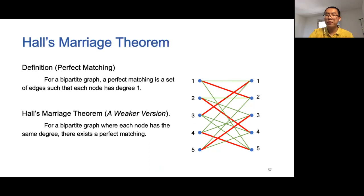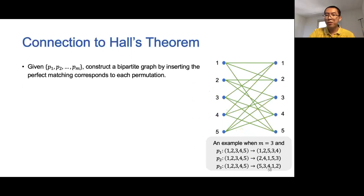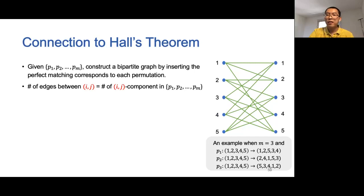Hall's Marriage theorem is a well-known theorem in graph theory with many applications in mathematics and computer science. It provides a necessary and sufficient condition for the existence of a perfect matching in a bipartite graph. In this work, we use a weaker version which states that for a bipartite graph where each node has the same degree, a perfect matching is guaranteed to exist. We now connect our problem to Hall's Marriage theorem. Suppose p1, p2, ..., pm are the permutations we want to prepare random sharings for. We first construct a bipartite graph by inserting the perfect matching corresponding to each permutation, so the number of edges between i and j equals the number of (i,j) components across all permutations.